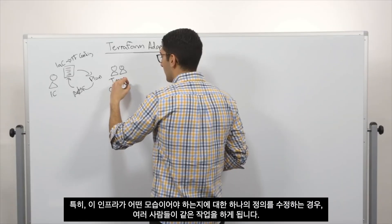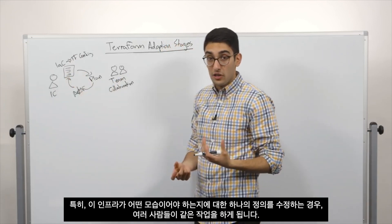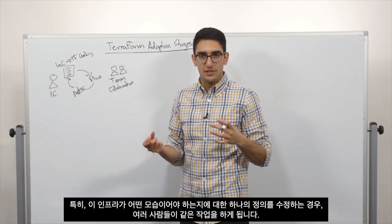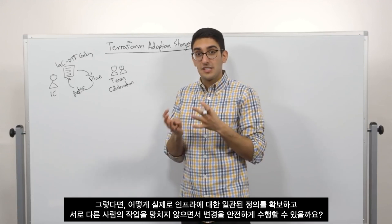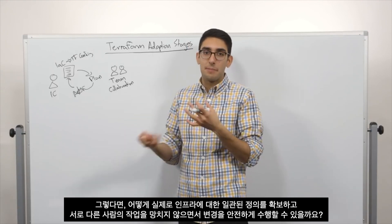Specifically, we're now modifying a single definition of what this infrastructure should look like, but we have multiple people doing it. So how do we actually ensure that we have a consistent definition of our infrastructure and that we're making these changes safely, that we're not stepping on each other's toes?